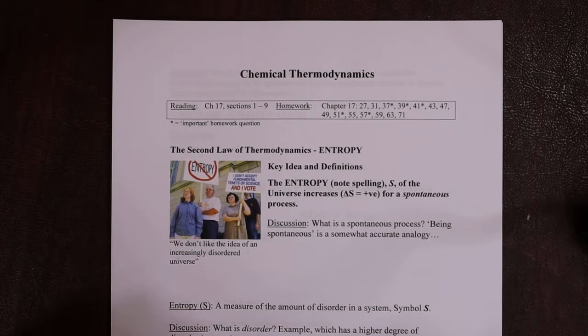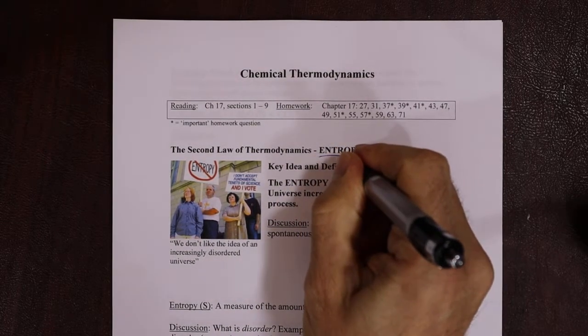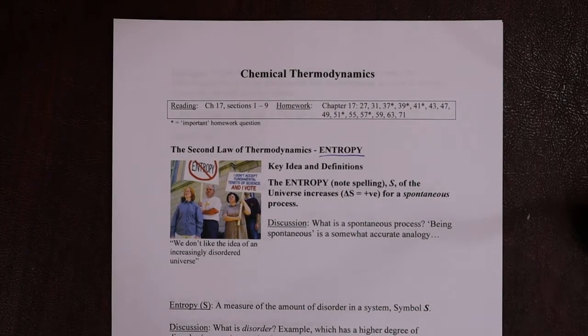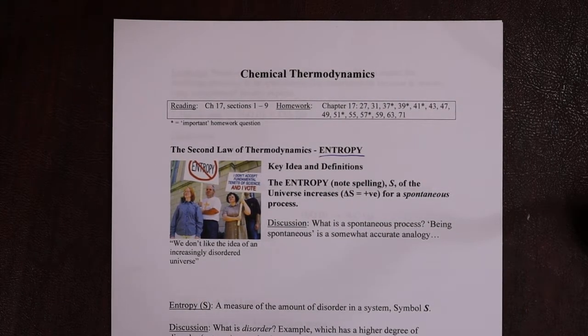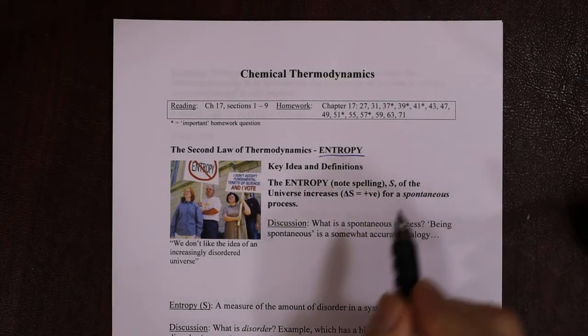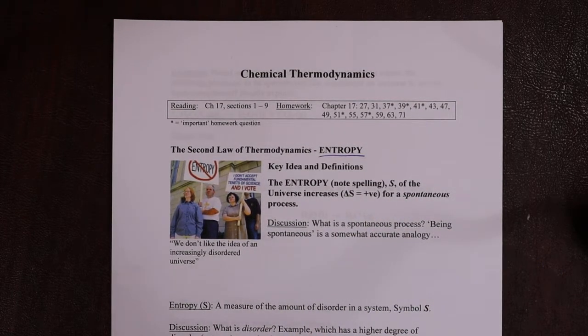And it's the second law of thermodynamics which deals with entropy. Entropy is spelt differently, so it's not enthalpy, it's entropy. Entropy, note the spelling, symbol S, is a measure of disorder. It turns out that nature likes materials to be disordered. Things are more stable the more disordered they are. Sounds weird but it's a proven scientific fact.